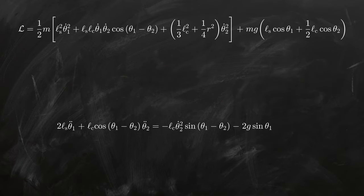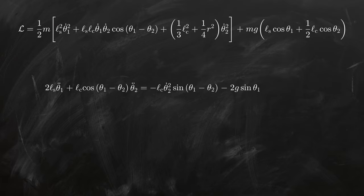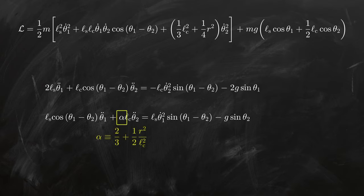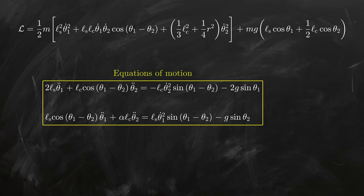The procedure for theta 2 is completely analogous to what we just did for theta 1, so I won't show it, but you can carry it out yourself if you feel like it. Eventually, you should end up with something like this, where I have introduced a dimensionless constant alpha, which makes things look a bit nicer. Anyway, after all that work, we've managed to derive these equations of motion for the cylinder, which we still need to actually solve.